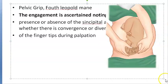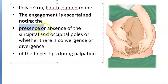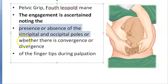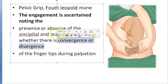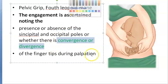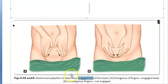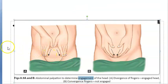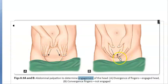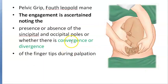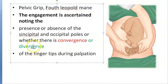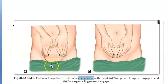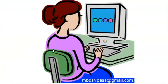With the fourth Leopold maneuver, you assess the sinciput and occiput poles and whether the hands converge or diverge. If the hands diverge, the head is engaged — it has gone down into the pelvis. If the hands converge, the head is not yet engaged. So: diverging means engaged; converging means not engaged.